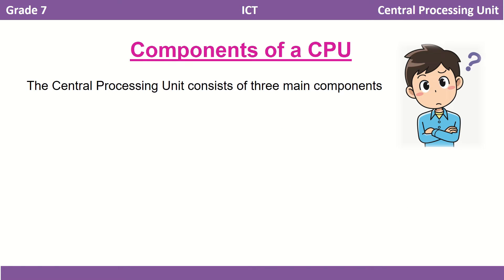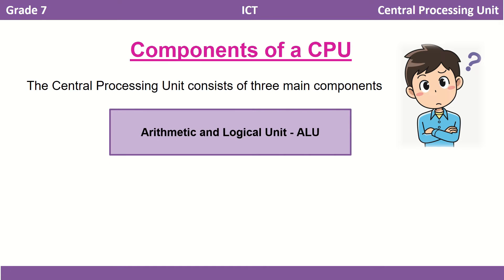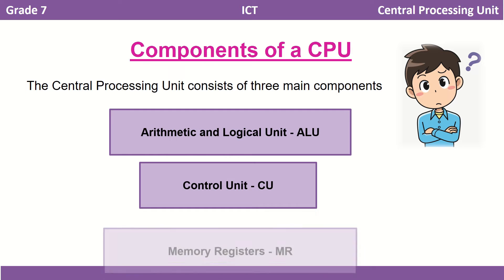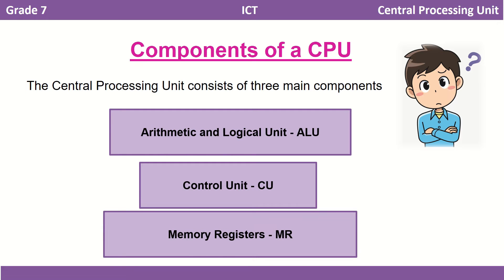Now let's see what the other parts inside the CPU are. The CPU can be divided into three main parts. The first is the Arithmetic and Logical Unit, ALU. The second part is the Control Unit, CU. The third part is called Memory Registers, MR. Let us now learn more about these three parts.